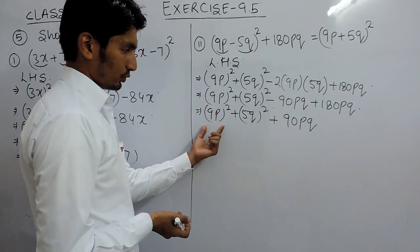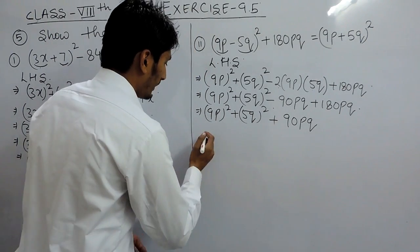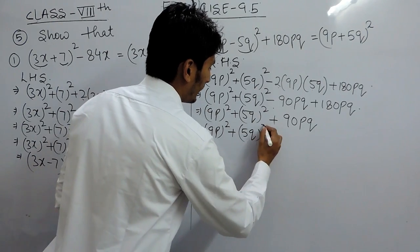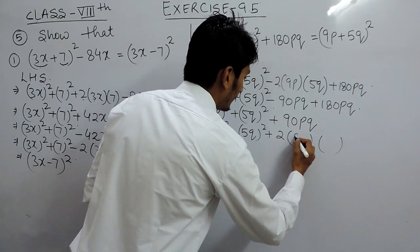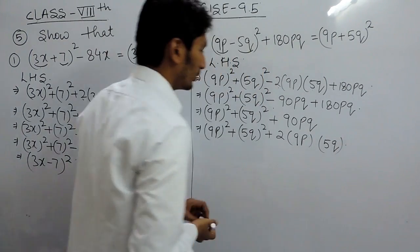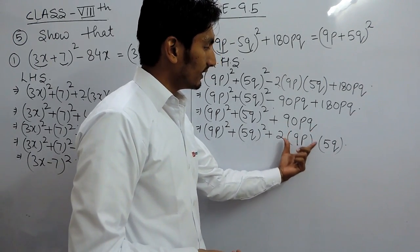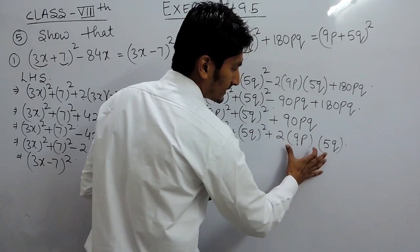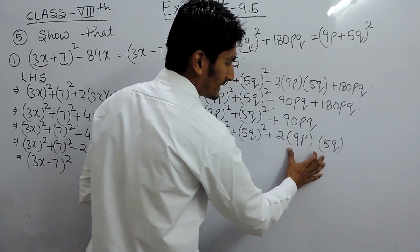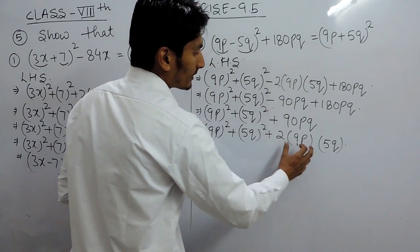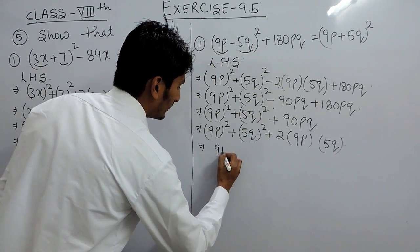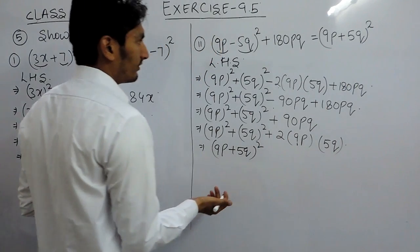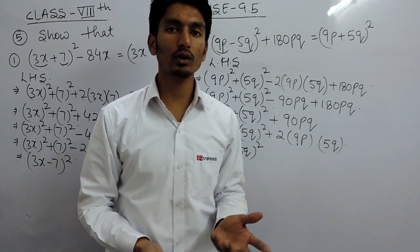Now if I consider this as a² + b², and the 90pq as 2ab, then 2×9p×5q gives 90pq — the same result. So this expression can be written as a² + b² + 2ab, where a is 9p and b is 5q. We know that a² + b² + 2ab equals (a + b) whole square, which is the same as the right hand side. So we have proved that the left hand side equals the right hand side.